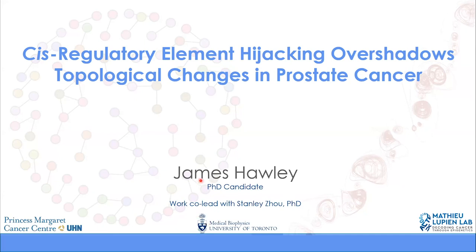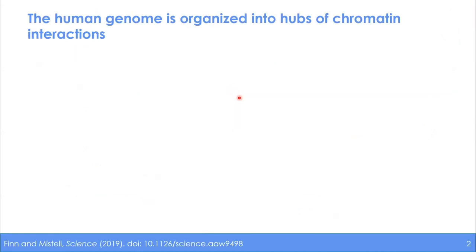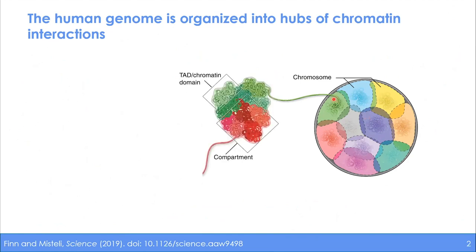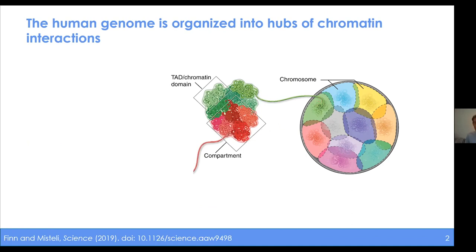We're going to be talking about chromatin organization and topological changes that we see in prostate cancer. To get started, you have probably heard this story about DNA stretched out linearly would be more than two meters long, but it's able to be compressed down inside some microscopic cell. You can look inside a cell and see within the nuclei where the chromosomes roughly locate inside the nucleus. But this isn't just like you smush them all together — there is some structure present in the DNA within the nucleus.